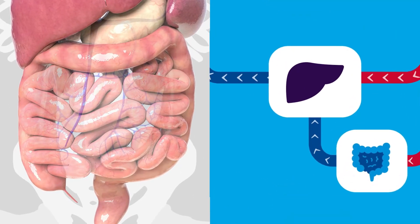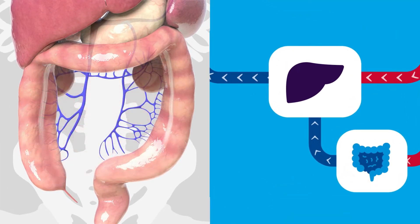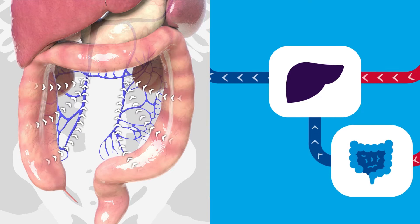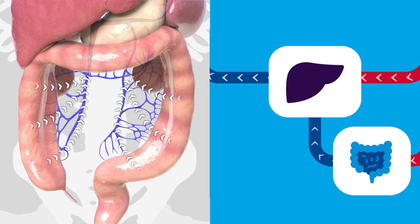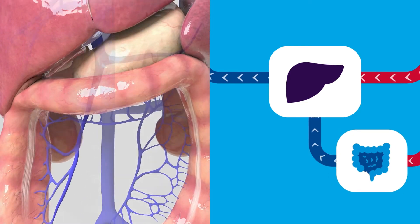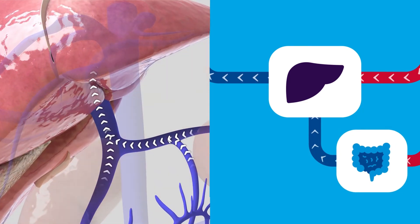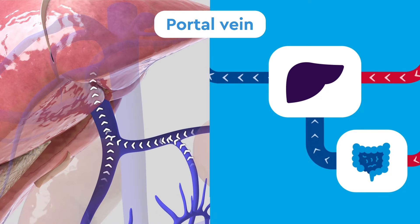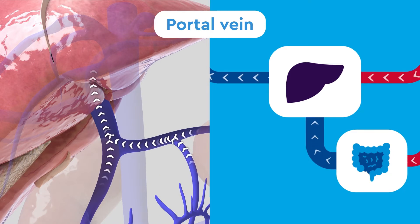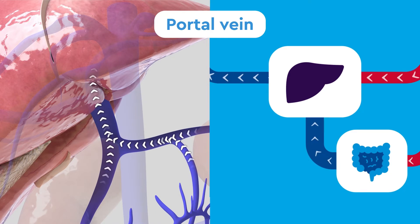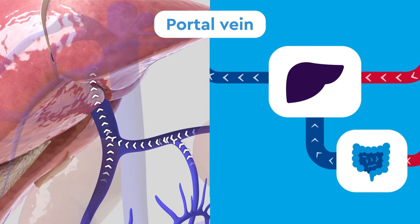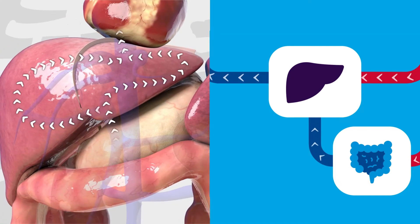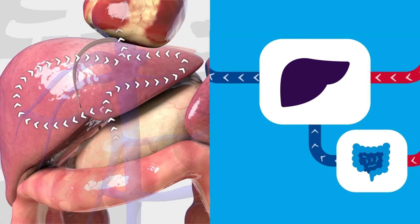As blood returns from the intestines, it passes through a special vein called the portal vein, which collects all the blood from the intestines and filters it through the liver.